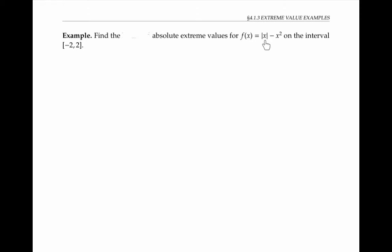For the next example, let's find the absolute extreme values for the function f of x, which is the absolute value of x minus x squared, on the interval from negative two to two. As before, we can find absolute extreme values by checking the critical numbers and also the endpoints of the interval, negative two and two. Because our function involves an absolute value, it's a little tricky to take the derivative, so let's first rewrite f using piecewise notation.